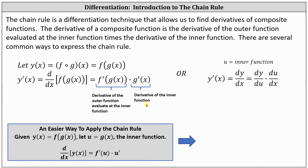We can also express the chain rule using Leibniz notation, where if u is the inner function, y prime of x equals dy/du times du/dx. Here, dy/du is the derivative of the outer function evaluated at the inner function u, and du/dx is the derivative of the inner function.